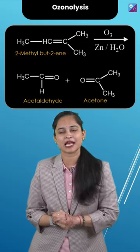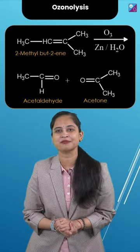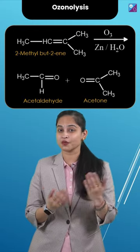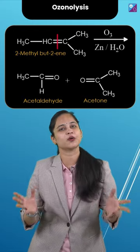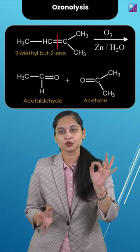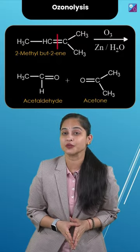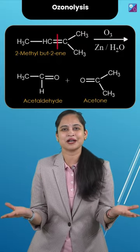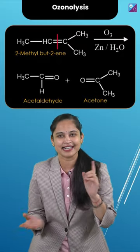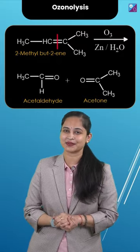Taking the example of 2-methylbutene. What you have to do is break the double bond and put the oxygen. So 2-methylbutene on ozonolysis — what will it give you? Acetaldehyde and acetone.